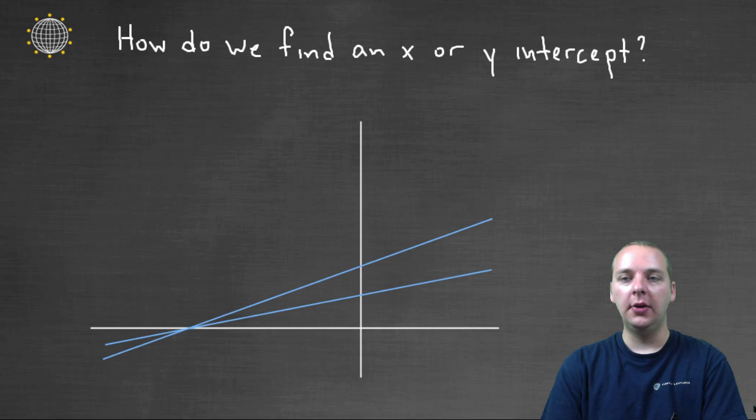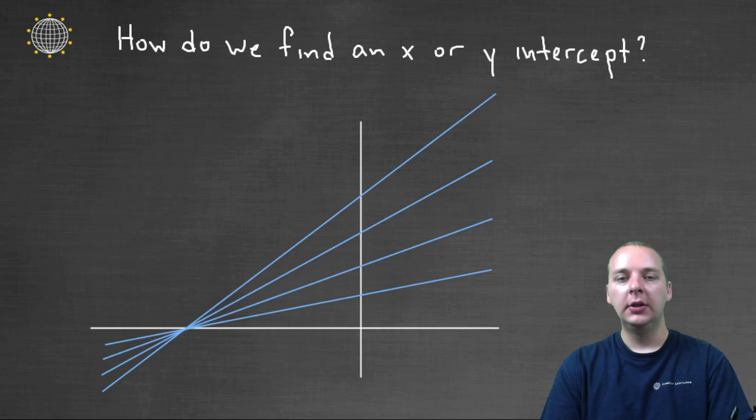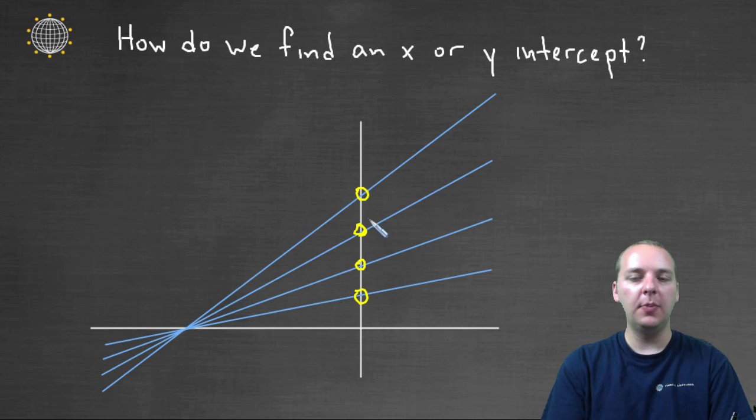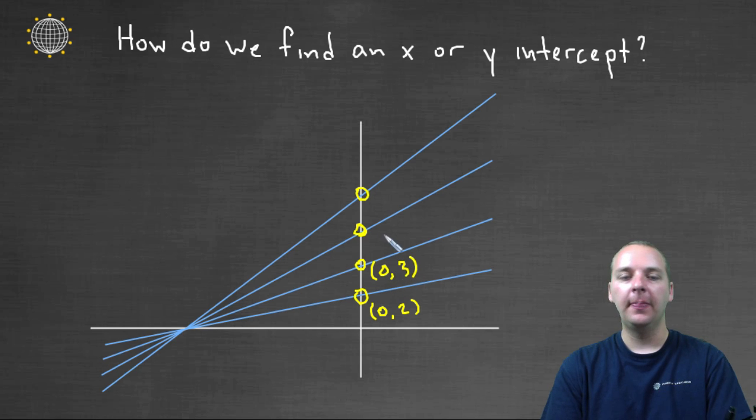But it could also be here, or here, or here. So I see a number of different y-intercepts for these four different linear graphs. And I don't know exactly where these y-values are, but we can make up some values. Let's say for this one, maybe it's zero comma two. And maybe the next one's at zero comma three. And maybe the next one's at zero comma five. And maybe the last one's at zero comma eight, or something like that.